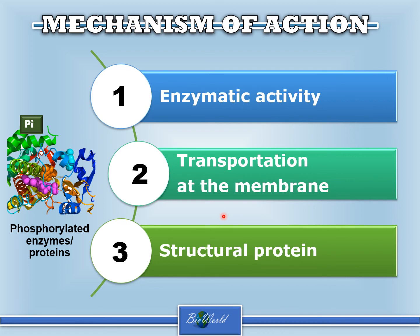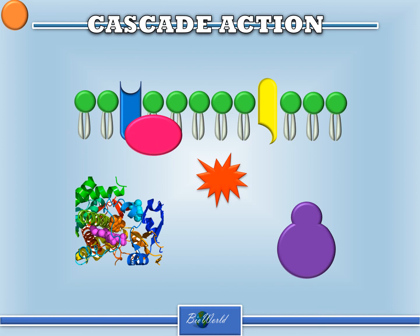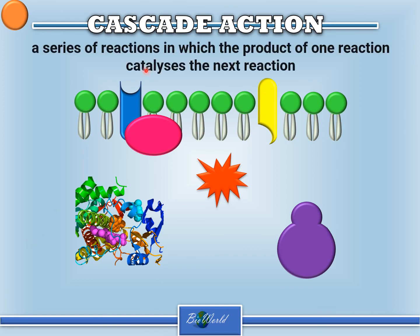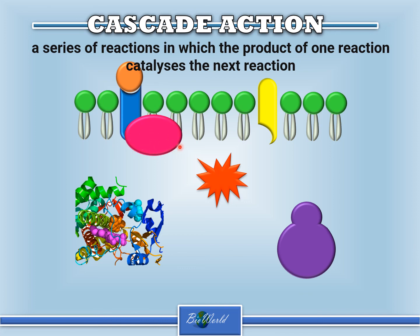The mechanism of action of non-steroid hormones has another name called the cascade action. Cascade action is a series of reactions in which the product of one reaction will then catalyze the next reaction. The non-steroid hormone binds to the protein receptor located on the plasma membrane to form a hormone receptor complex. This hormone receptor complex is able to convert the inactive G protein to become an active G protein — the hormone receptor complex behaves like an enzyme in doing so.